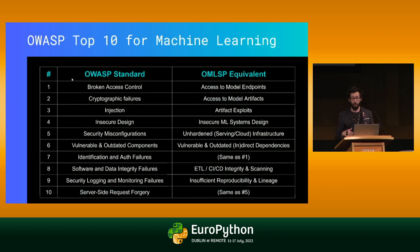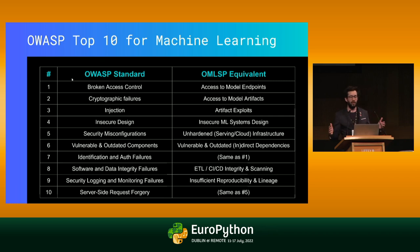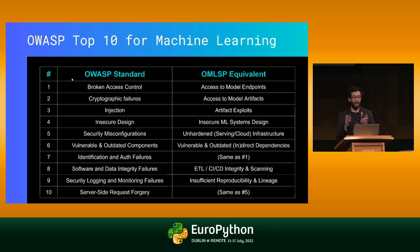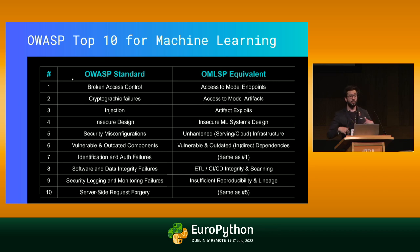If we look back at those components defined initially with the OWASP Top 10, we can now define what we call the OMLSP — the Open Machine Learning Standards Project — with one-to-one mappings between things like broken access control to access to model endpoints, and cryptographic failures to access to model artifacts. We've kicked off an initiative within the Linux Foundation to define some of these things through a machine learning security committee. This is more of a call to action — we're all currently looking to build those best practices.